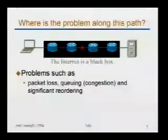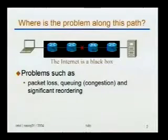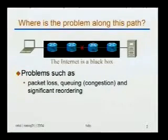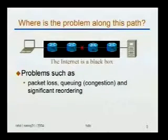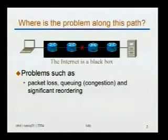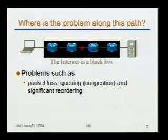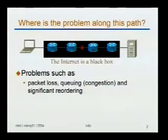Let me start with a very simple question. If given a problem path — say from that laptop to that server-looking box over there — and I'm talking about problems such as packet loss, high queuing, or significant reordering along the path, what would you do to figure out where exactly along that path the problem is?